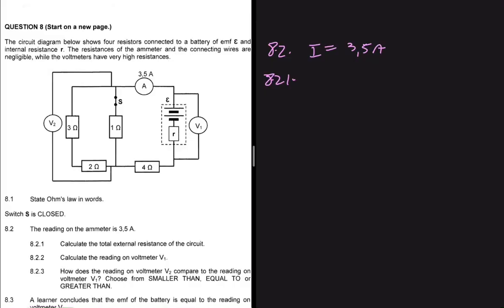Looking at the cell in the circuit, we can see the positive terminal and the negative terminal. Current flows from the positive terminal — it cannot bypass through the battery, it has to take the longer route. The current will flow in this manner. Here we have a voltmeter, so current is not going to go through that path.